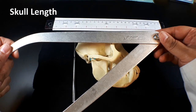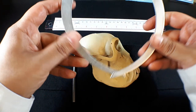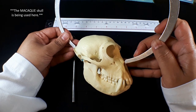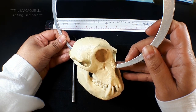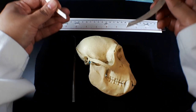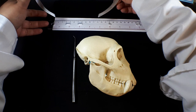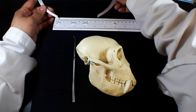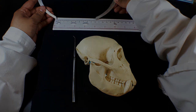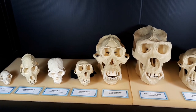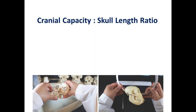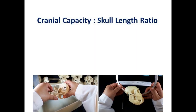Use the calipers to measure the length of the skull from the top of the nasal aperture to the back of the skull. Be careful not to change the angle of the calipers. Use a ruler to measure the distance between the points and record this value as the skull length. To account for differences in overall skull size between the primates, we can determine the ratio between cranial capacity and skull length.